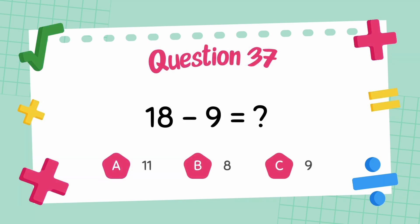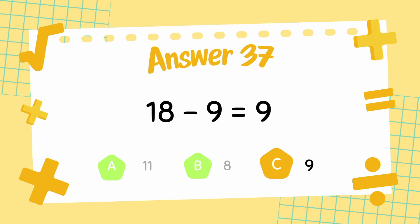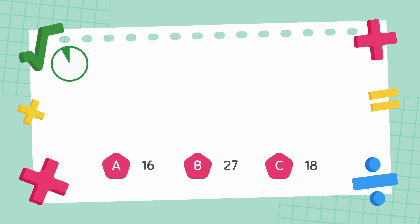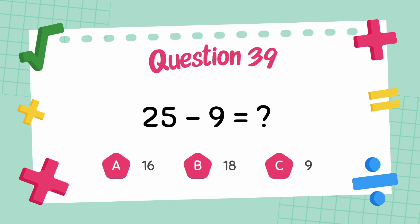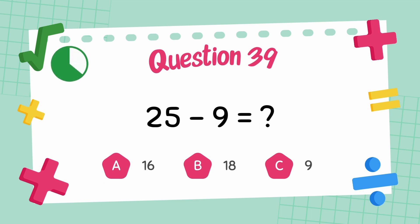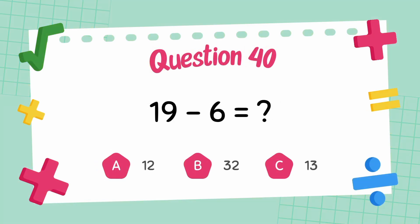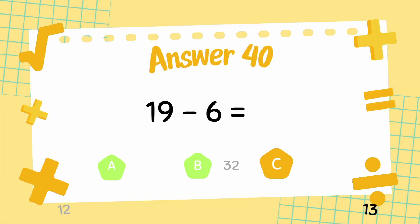What is 18 minus 9? The answer is 9. What is 22 minus 6? The answer is 16. What is 25 minus 9? The answer is 16. What is 19 minus 6? The answer is 13.